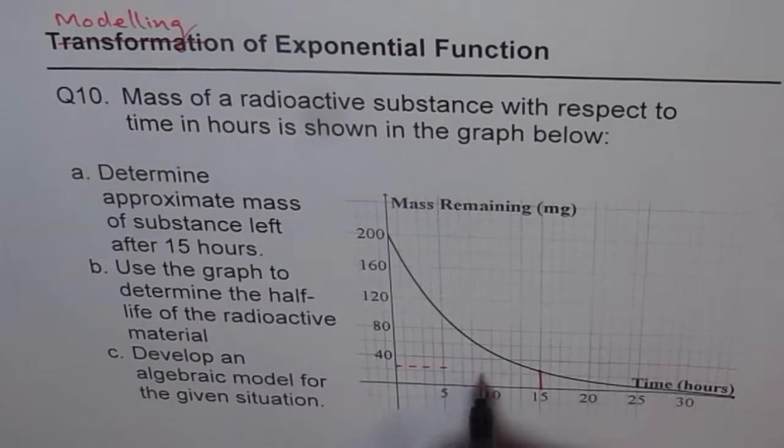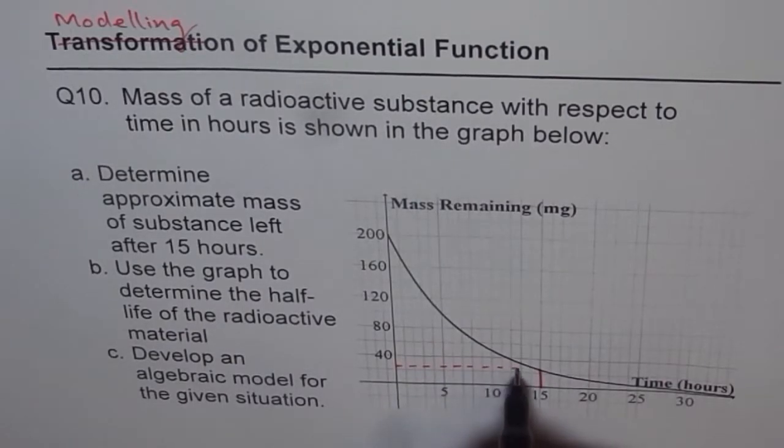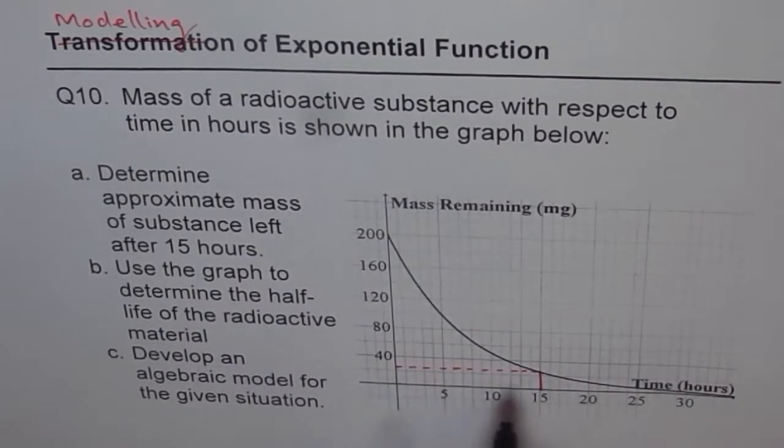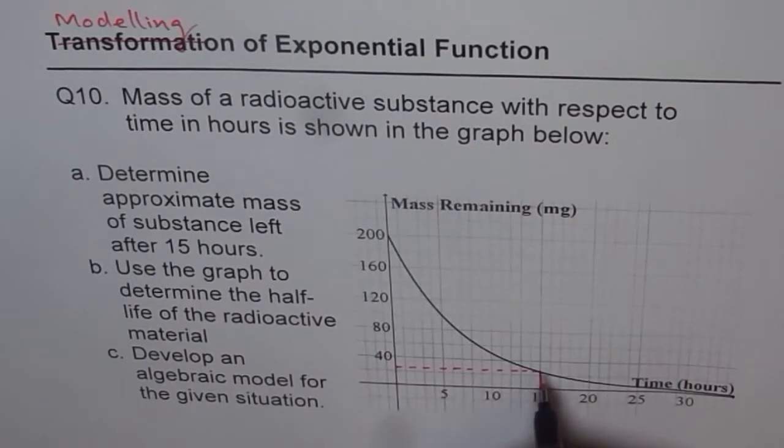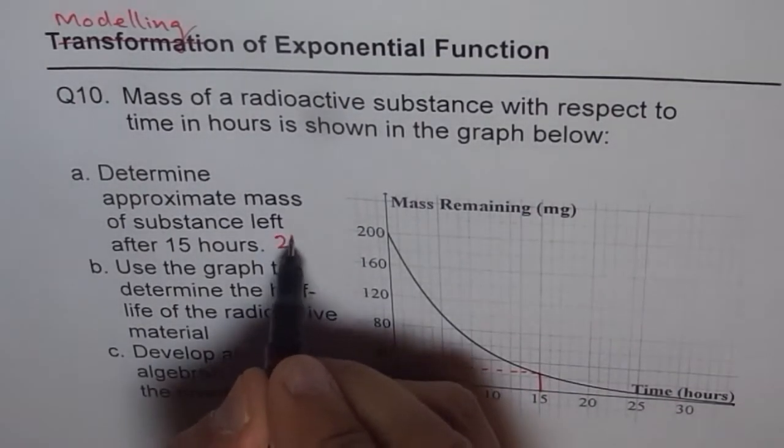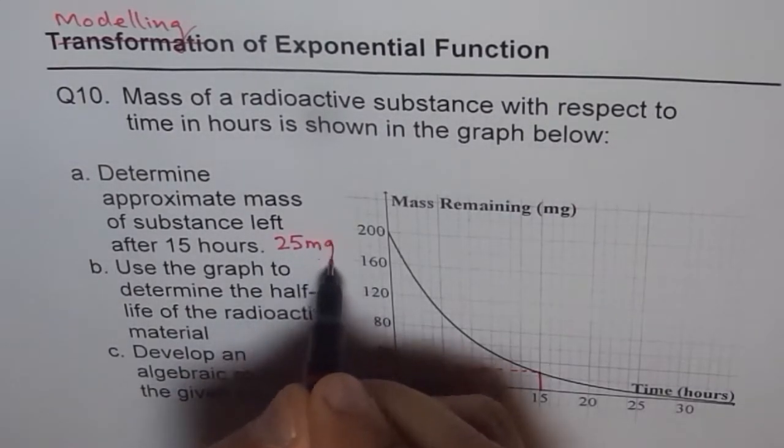So that is how we can find what is the mass left. It is approximately, each unit is 40, half will be 30 and seems to be very close to that. So it is between 20 and 30, we can say it is 25 milligrams. It is always an approximate answer. So we'll write 25 milligrams for part A.